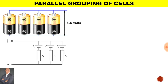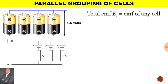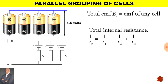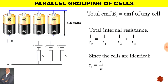When grouping cells in parallel, the total EMF will be the same as the EMF across each cell. To calculate the total internal resistance — because the values of each cell are identical — the simple way is to divide the value of the internal resistance by the number of cells.